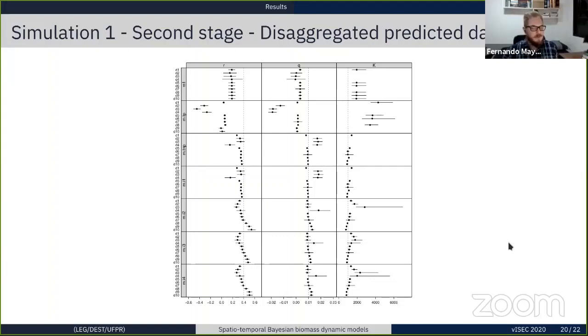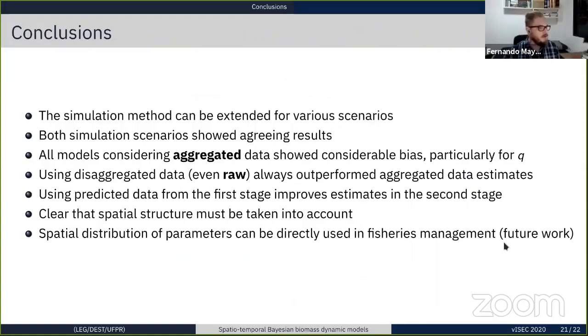Just to conclude, the simulation that we developed can be extended for various scenarios. This was just one particular scenario we used. Both simulation scenarios showed agreeing results. All models considering aggregated data showed considerable bias, particularly for q parameters. Using disaggregated data, even raw data, always outperformed aggregated data estimates, and using predicted data from the first stage improved estimates in the second stage. It's clear that the spatial structure must be taken into account if you want to consider these sorts of things. The spatial distribution of parameters can be directly used in fisheries management, which is something we are working on. Thanks for watching!